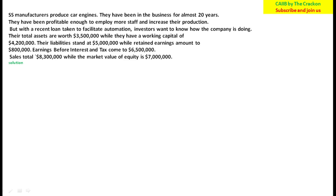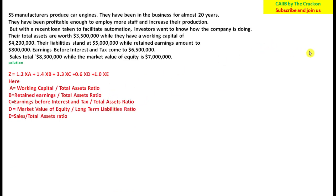Let me show you the Altman Z-Score formula again for reference. The formula is: Z = 1.2×A + 1.4×B + 3.3×C + 0.6×D + 1.0×E. Here, A = working capital / total assets, B = retained earnings / total assets, C = EBIT / total assets, D = market value of equity / long-term liabilities, and E = sales / total assets.